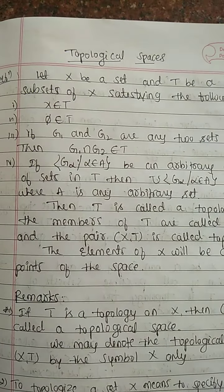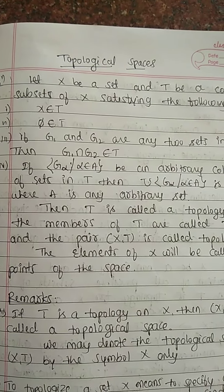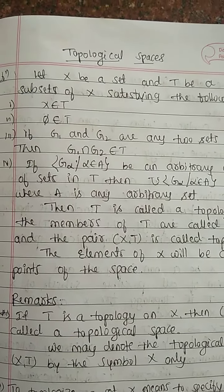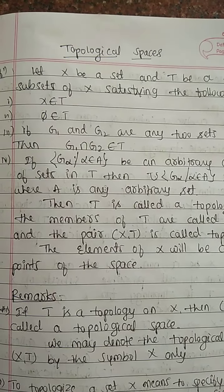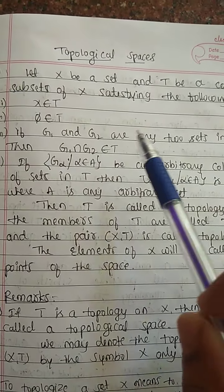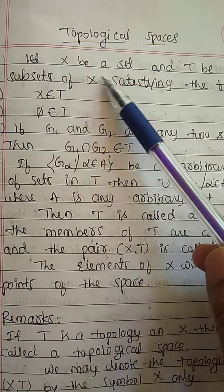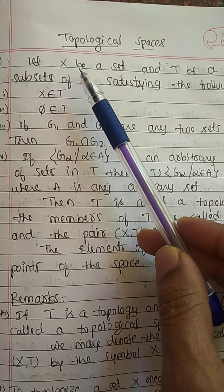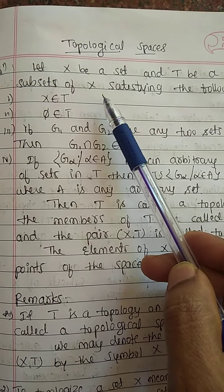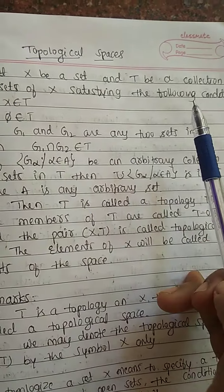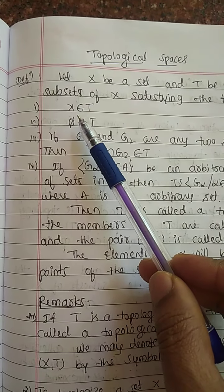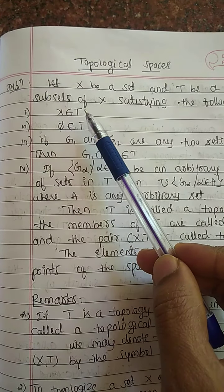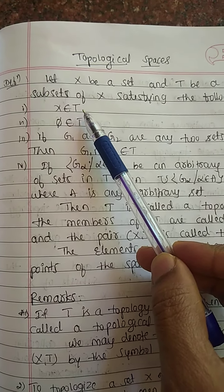Today we are discussing some concepts of topological spaces. First we should understand what is topology and topological space. Suppose X is a set, and T is a collection of subsets of X, satisfying the following conditions. First condition: X belongs to T — it should be there in the collection of subsets of X.